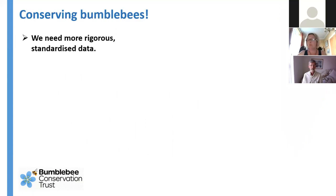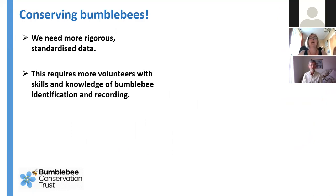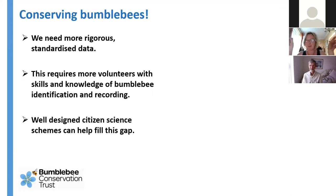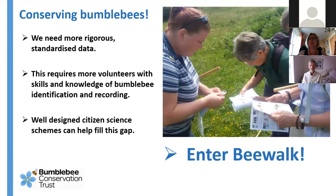What can we do? We need more rigorous, standardized data so that we have better baselines of where we are now. This requires more volunteers - it's my job to train people in identification but also recording. We need well-designed scientific schemes to help fill this gap. Gone are the days of small numbers of well-off gentlemen recording their wildlife; we need armies of keen citizen scientists to collect much more data. BeeWalk particularly has been designed to fill that gap for bumblebees.